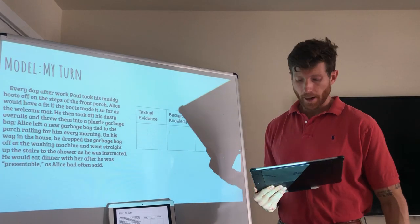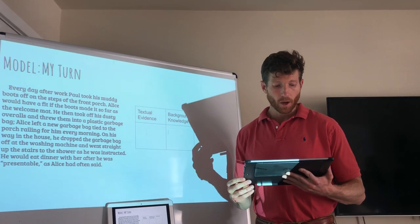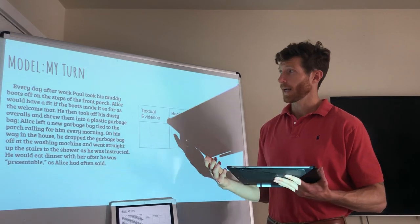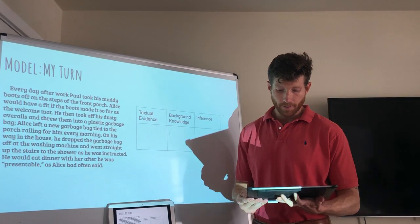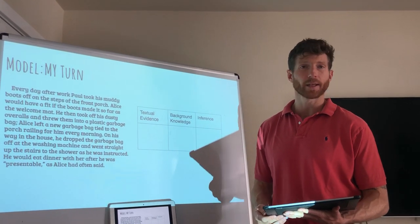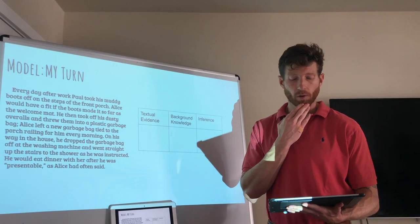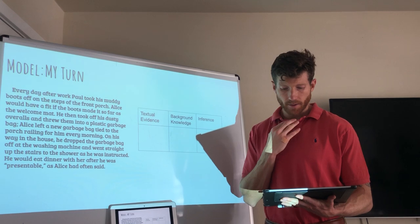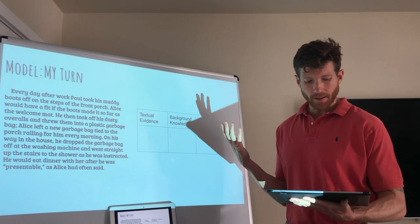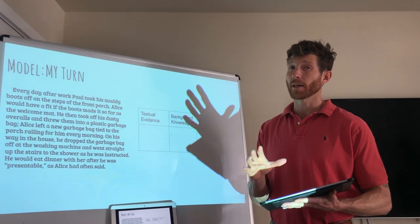After reading the paragraph twice, I'm going to annotate it for important facts and details that stand out. Look for repetition in the words or ideas the author is using. I keep noticing that the author keeps mentioning dirty clothes, and it feels like Paul must follow a strict set of rules when entering the house. His wife or mother, Alice, seems to demand that he follow all these rules — she must want to keep a clean house. I wonder what kind of relationship they have, and what Paul does for a living. Maybe a third read will make those inferences a little more clear.